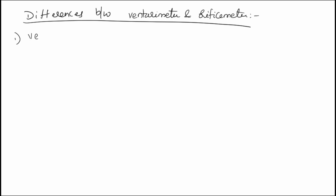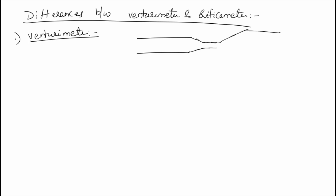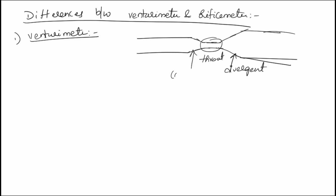First we see what is a venturimeter and what is an orifice meter. The venturimeter looks like this: first there is a convergent part, then it goes to the throat, and then the divergent part takes place. So it consists of mainly three parts and is inserted into a pipe to measure fluid flow.